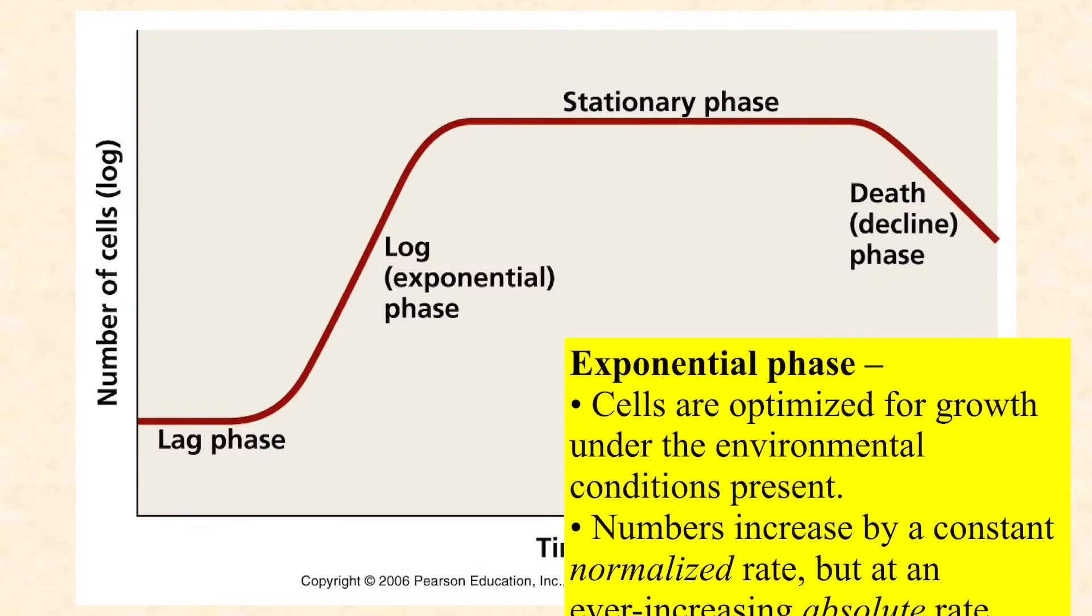And they're growing now as fast as they can. We're going from zero to 60, just like that. And so they're optimized for growth under the current environmental conditions. They've expressed all the right genes. They've made all the adjustments for pH and salinity and temperature and everything else. And now their numbers are increasing by a constant normalized rate. Normalized means per cell. In other words, they're doubling every hour or they're doubling every five hours or they're doubling every 24 hours. Their absolute growth rate is always increasing because early on one cell is becoming two and it took an hour and then two becomes four and it took an hour and four becomes eight and it took an hour. So their absolute growth rate is very low. It just took several hours and they're only up to eight cells.